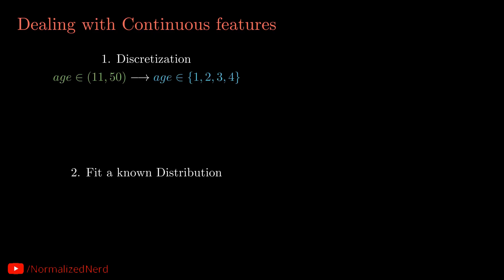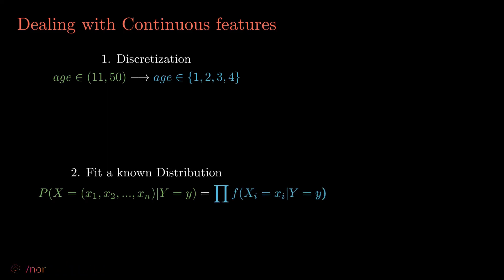The second method is to fit a known distribution to our features — this could be a normal distribution, a Poisson distribution, depending on the data. When we have a known distribution, we know its probability density function. So to calculate the probability of x given y equals some label, we can just use the PDF of the known distribution. Here F denotes the PDF, and the product sign tells you that we're still assuming the features to be independent of each other — only then can we multiply the probabilities. That's how we deal with continuous features.